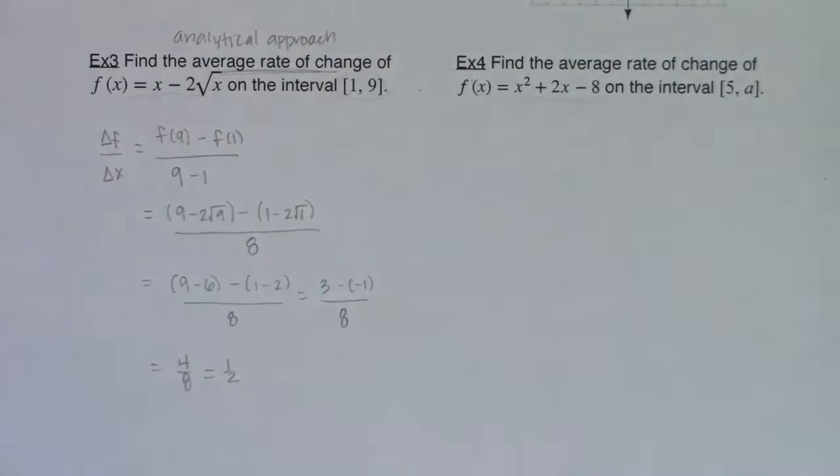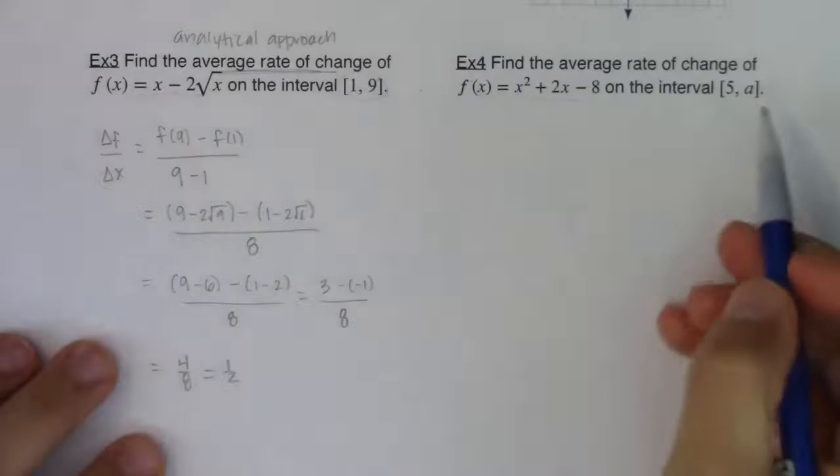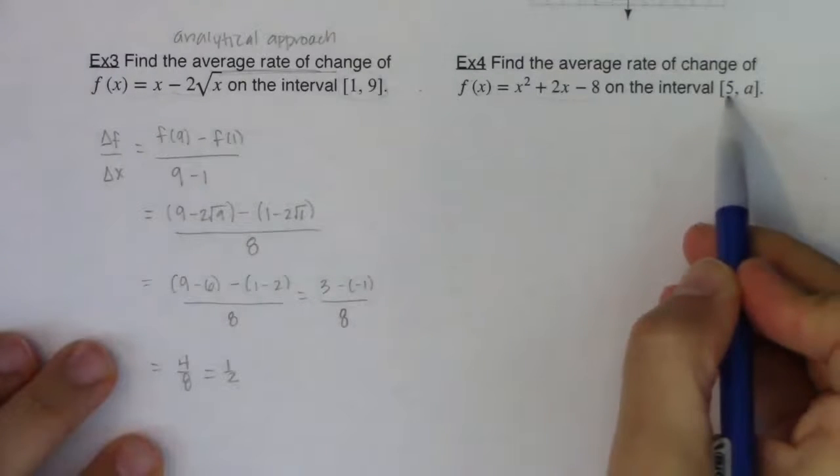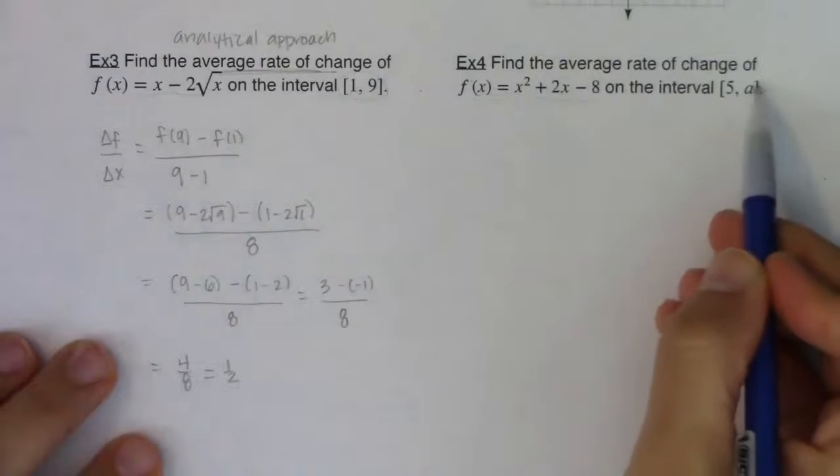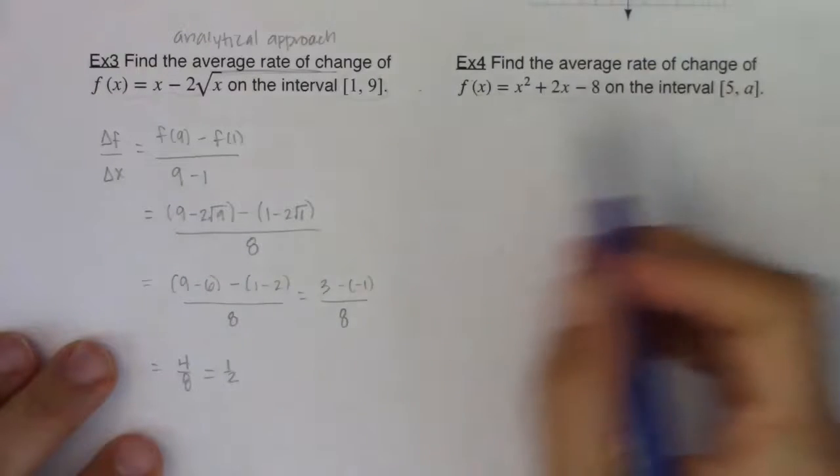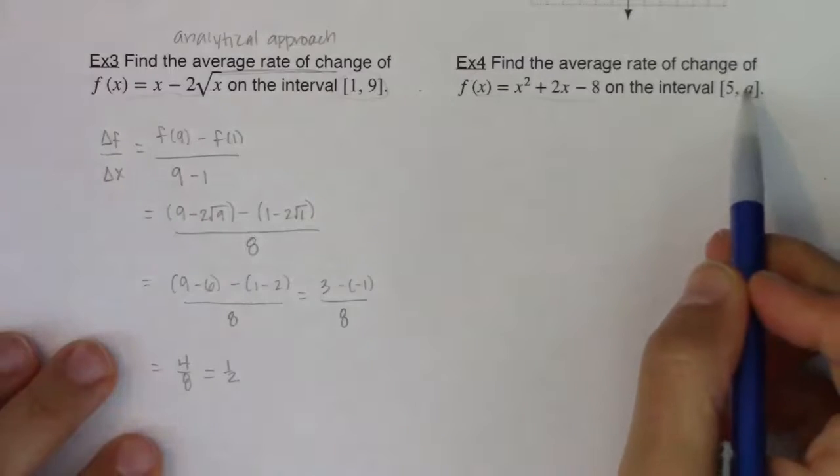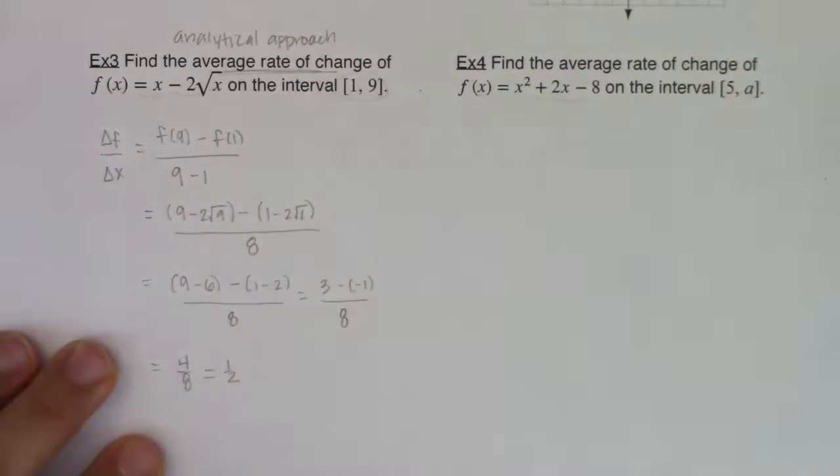All right, so with that, let's try example 4, which is a little wonkier, because I didn't give you two numbers. I gave you a number and a letter. So what this will ultimately mean is if I give you a letter as one of these input values.